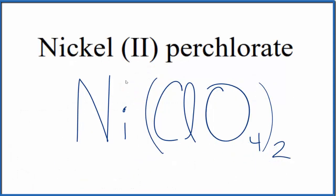This is the formula for nickel(II) perchlorate: Ni(ClO4)2. We have two perchlorate ions.